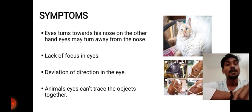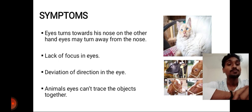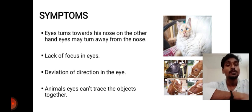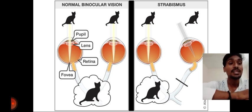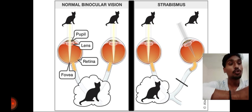Symptoms: Eye turn towards the nose. On the other hand, eyes may turn away from the nose. Lack of focus in the eyes. Deviation of direction in the eyes. The animal's eye cannot trace the object together. You can see here the normal binocular vision compared to the Strabismus disorder, where they cannot see objects directly and see with the crossed eye.